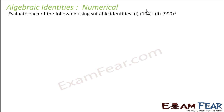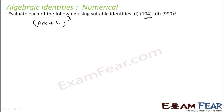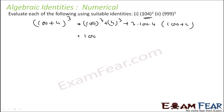Let's evaluate 104³ using suitable identities. I can write 104³ as (100 + 4)³. Using the formula a³ + b³ + 3ab(a + b): 100³ is easy to find, 4³ = 64. The 3ab term is 3 × 100 × 4 = 1200, into (100 + 104). Solving this becomes 1,124,864.